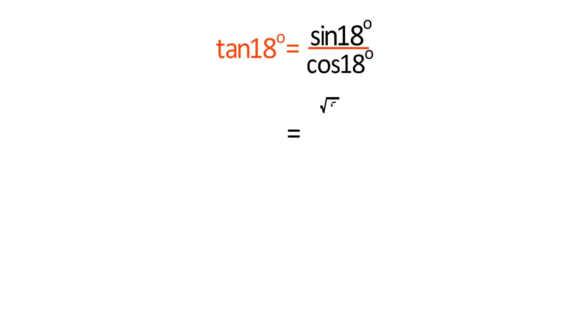Which equals square root 5 minus 1, all over 4, divided by square root 10 plus 2 root 5, all over 4. After canceling 4, we get square root 5 minus 1 over square root 10 plus 2 root 5.